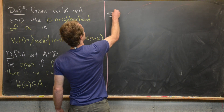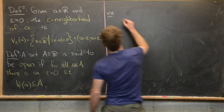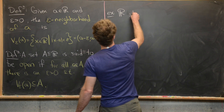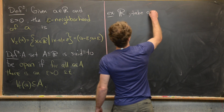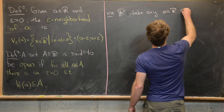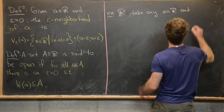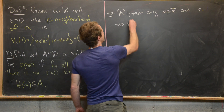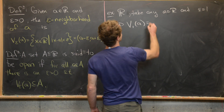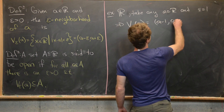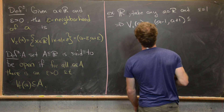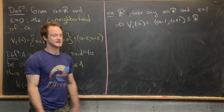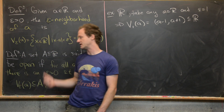The two classic examples to start with: first, all real numbers. This set is most definitely open. We can take any a in the real numbers and find an epsilon — maybe we set epsilon equal to one — and the neighborhood V_1(a) equals the open interval (a-1, a+1), which is definitely a subset of R. So the whole real numbers is an open set.